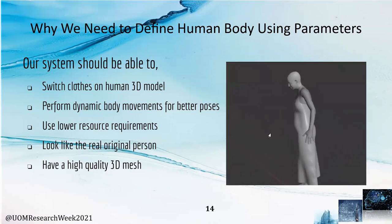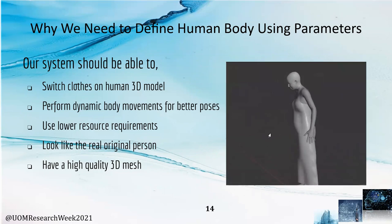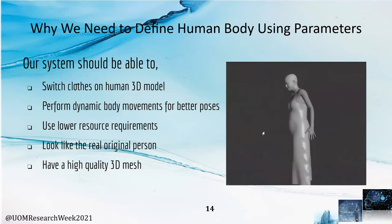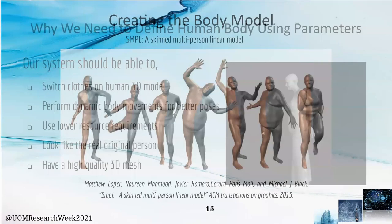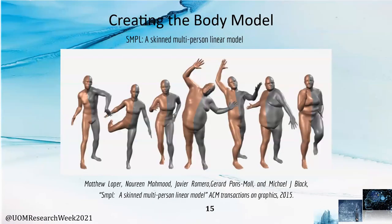Hence, we need a parameterized body model where we get user inputs once and use those input images to create an animatable 3D model. Then we can use that animatable 3D model throughout the virtual try-on process. Thank you, Gayal. Then we will go on to how we actually implement the creation of the 3D body model. As we mentioned earlier, there is a parameterized method introduced in the research paper called Skinned Multi-Person Linear Model, or SMPL for short.